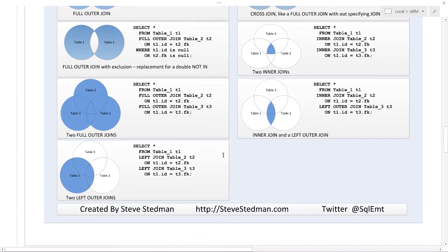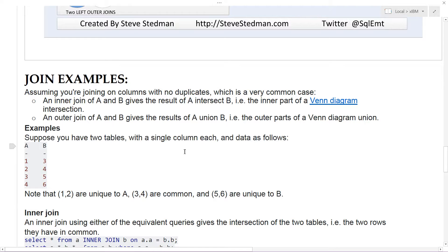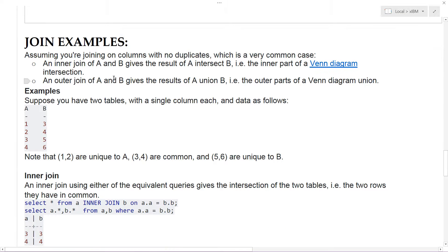These are the main types of SQL joins. And then just as a review of what on earth a join is, so assuming you're joining two tables and you want the information from table one to be combined with the information from table two, you join them together. And in order to join them, you need to have some column that shares the values. And that's a join. So assuming you're joining on columns with no duplicates, which is a very common case, an inner join of A and B gives the result of A intersect B, so good old math terminology here, the inner part of the Venn diagram that we just looked at.